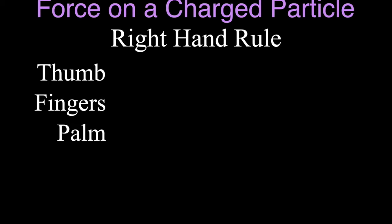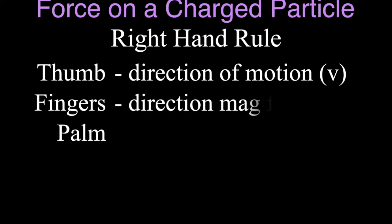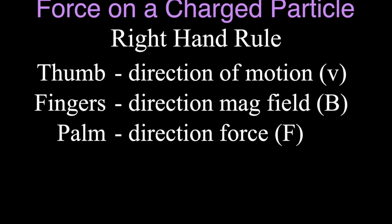When we determine the direction of the force on a charged particle, most commonly we use one of the right-hand rules. There are several different ways you can do this with your right hand, and this is the way I like to do it. You use your right hand — you need your thumb, your fingers, and your palm. You take your thumb and point it in the direction of the motion of the charged particle, point your fingers in the direction of the magnetic field, and your palm will point in the direction of the force.